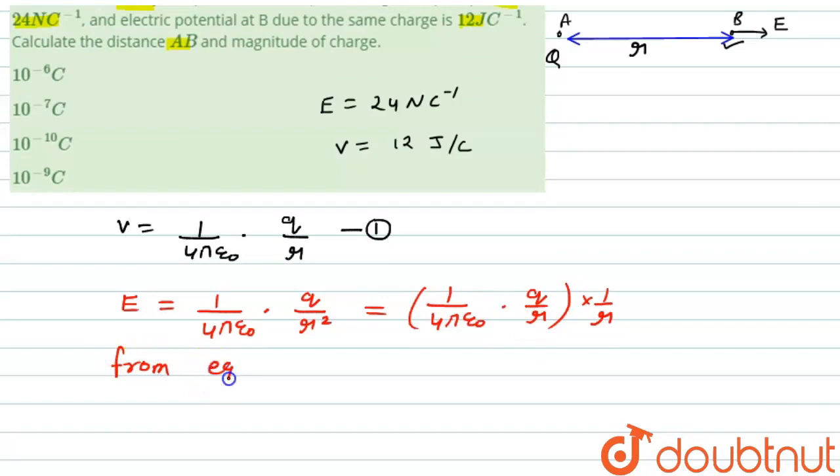From equation first, we can put the value E equals V by R, so R equals V upon E. In this question, V is 12 and E is 24, so it will be equal to 0.5 meter. Now we have to calculate the magnitude of charge.